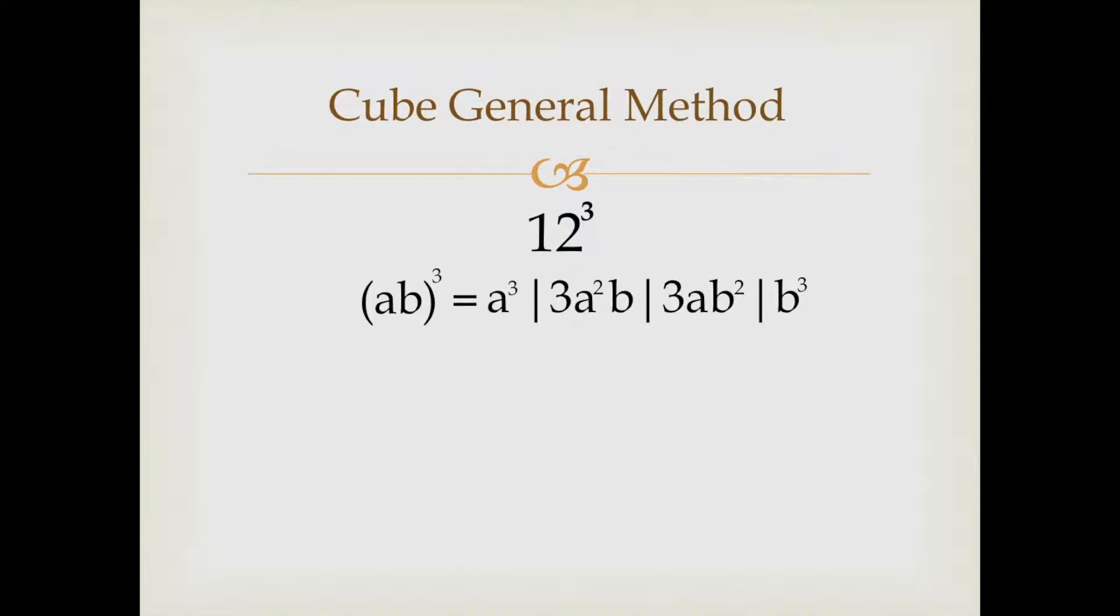Now a is 1 and b is 2. Accordingly we will put the values to get the answer: a³ that is 1³, 3a²b which is 3(1)²(2), 3ab² that is 3(1)(2)², and b³ that is 2³.